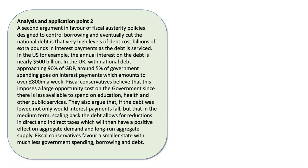My second analysis and application point — signpost to the examiner clearly that this is your second point. A second argument in favor of fiscal austerity policies designed to control borrowing and eventually cut the debt is that high levels of debt cost billions of pounds in interest payments as the debt is serviced. In the US, for example, interest on debt is nearly $10 billion a week. In the UK, around five percent of government spending goes on interest payments — about £800 million a week.